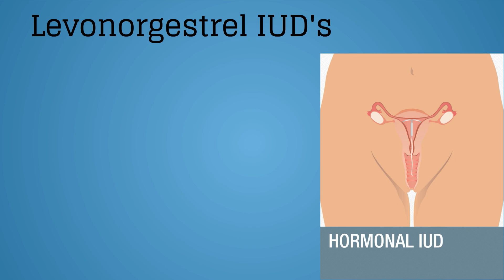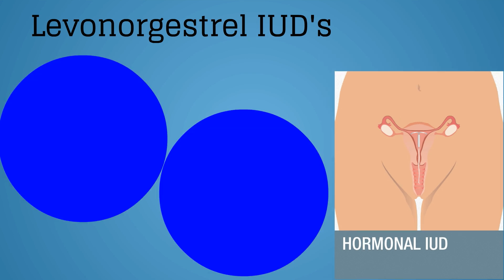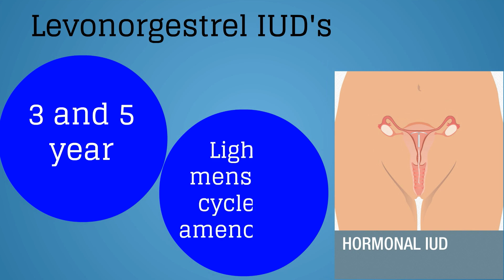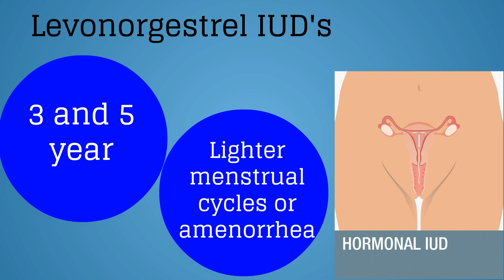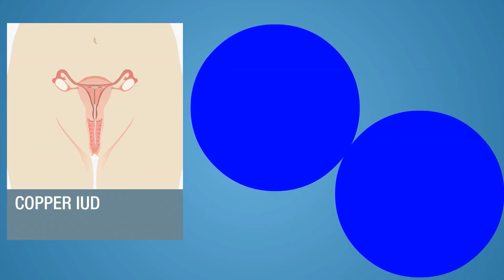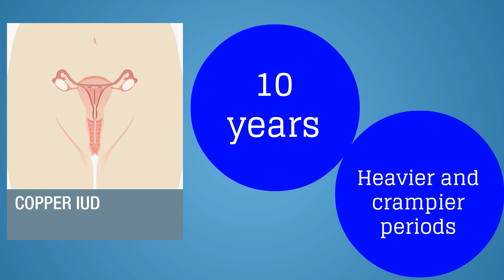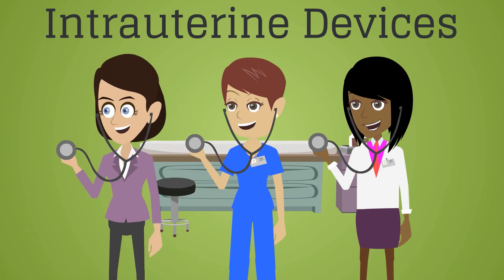The intrauterine device with the progesterone levonorgestrel works primarily by thickening cervical mucus to prevent sperm from entering the uterus. There are two devices currently available that last for three or five years. Most women will have lighter menstrual cycles or may become amenorrheic with these levonorgestrel IUDs. The copper IUD works by creating an unfavorable environment for sperm to fertilize an egg and lasts for 10 years. The most common side effects are heavier and crampier periods. Fun fact: the IUD is the most commonly used contraception among female gynecologists.